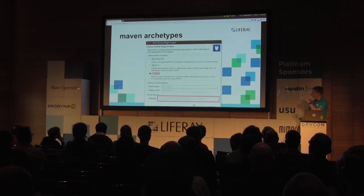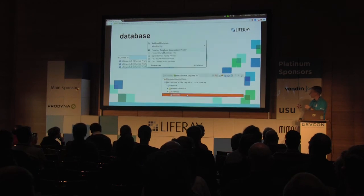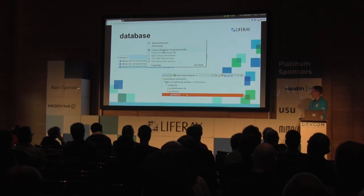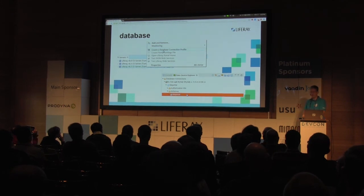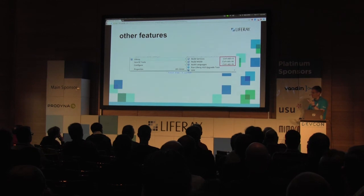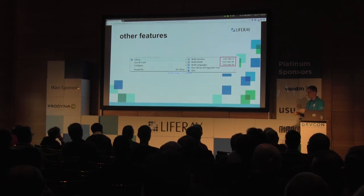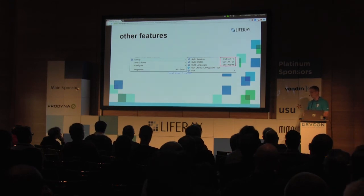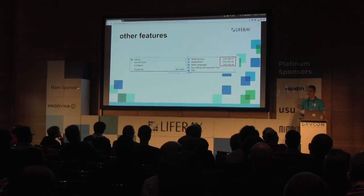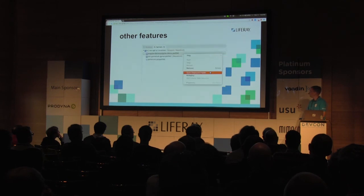Maven archetypes can now be specified in preferences. You can create a database profile — if you set up a database in portal.ext, you can create a profile quickly and explore that database from within Eclipse. We have global hotkeys: if you're doing Service Builder a lot and want to call Build Service repeatedly, from a global hotkey Control+Alt+V or W, it will run the appropriate Maven goal automatically in the background.